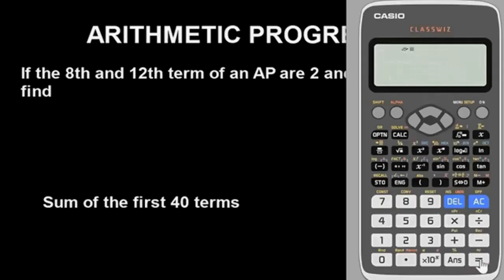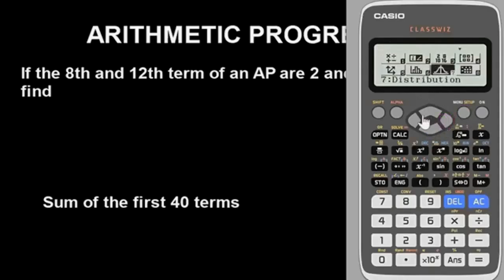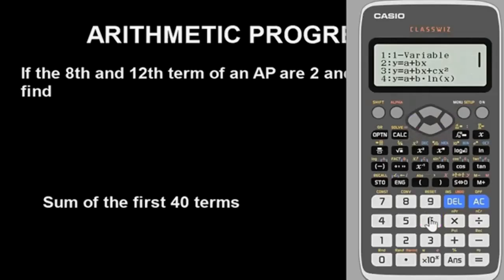Now that we have cleared it, go ahead and put the calculator in the mode we need to solve this problem, which is statistics mode. That's the mode of this calculator that will help us solve arithmetic progression. Press Menu — you'll see the options come out. Look for statistics; statistics is option 6.